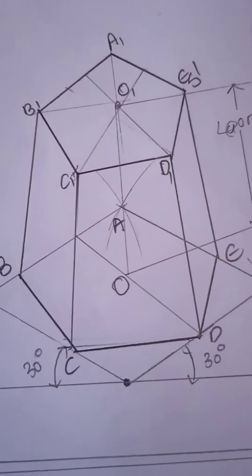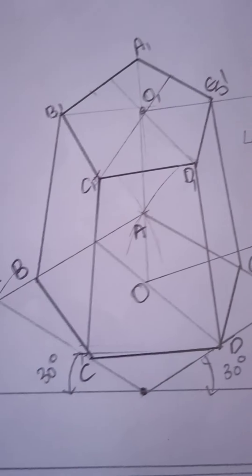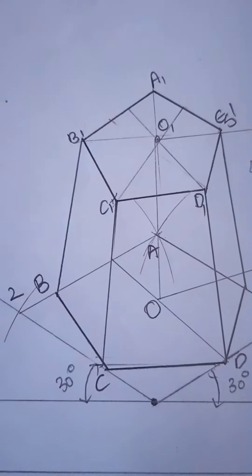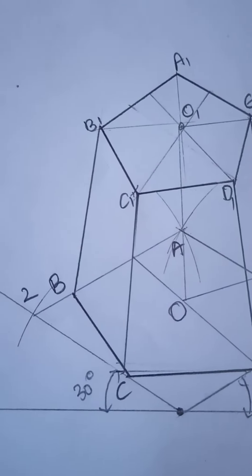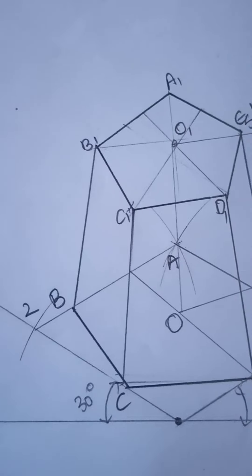The 3 slant faces are fully visible. So, BB dash and CC dash, DD dash and EE dash and the base edges BC, CD and DE by dark lines.